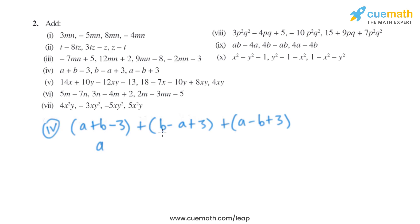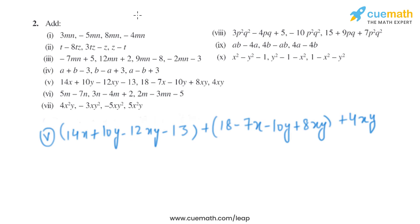Plus b plus b gives us 2b, and minus b gives us b remaining. Minus 3 plus 3 is 0, so only plus 3 is left over. The result is a plus b plus 3. Now let's move on to the fifth part.